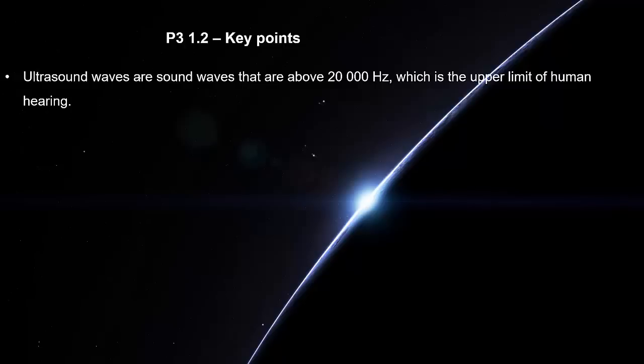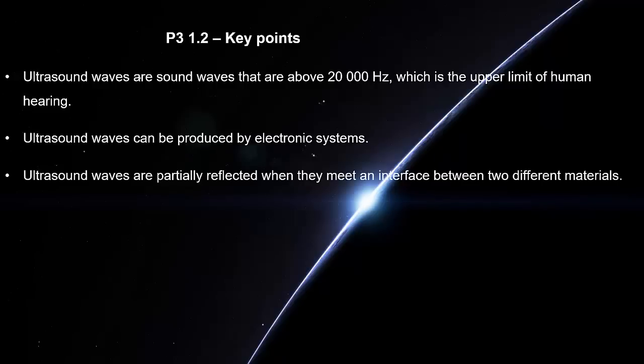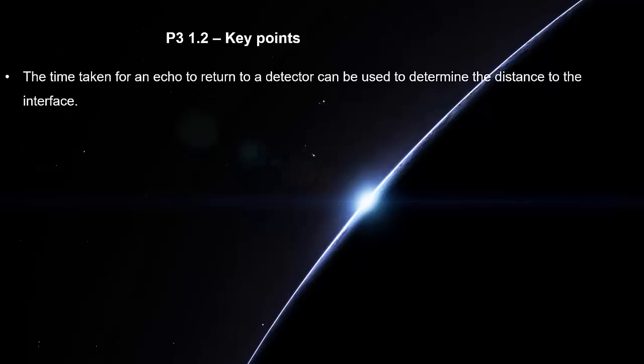Ultrasound waves are sound waves that are above 20,000 Hz, which is the upper limit of human hearing. Ultrasound waves can be produced by electronic systems. Ultrasound waves are partially reflected when they meet an interface between two different materials. The time taken for an echo to return to a detector can be used to determine the distance to the interface.